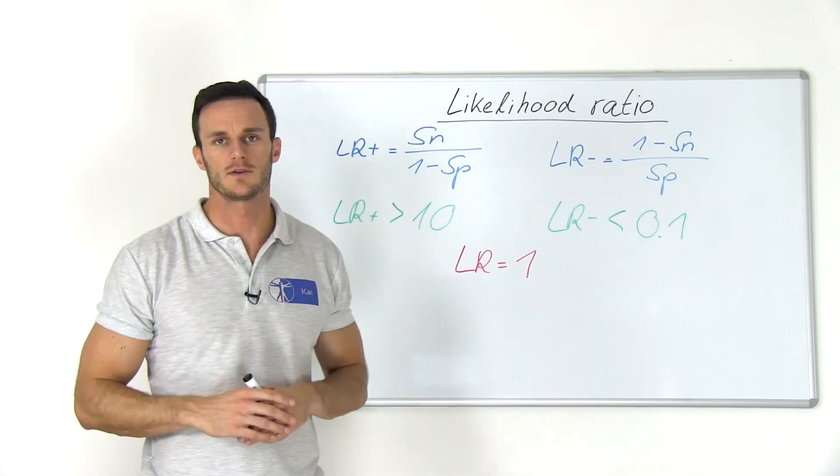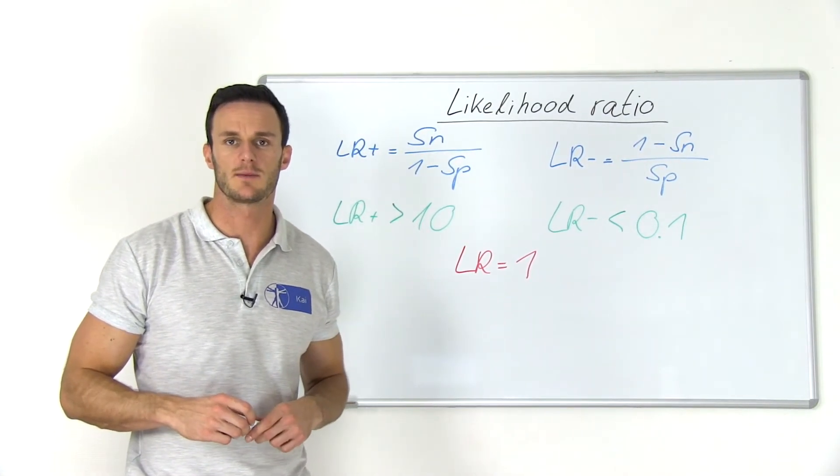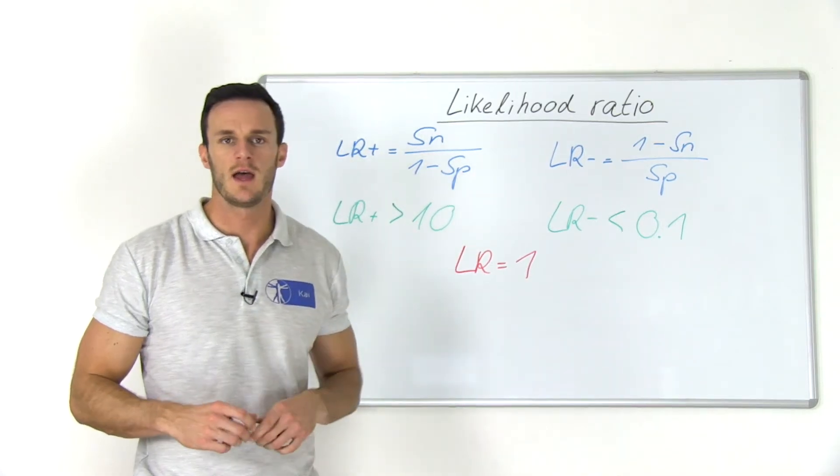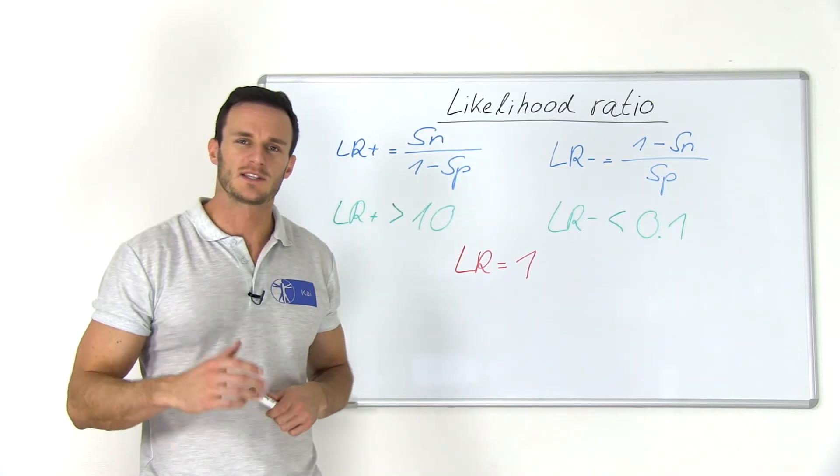Now, how do you use those two values in practice? So first of all, in your general practice the prevalence of an ACL tear based on literature is say 5%. Then, based on your anamnesis, you found a couple of signs and symptoms like an audible pop during a soccer match,